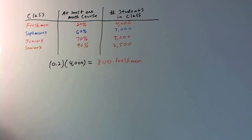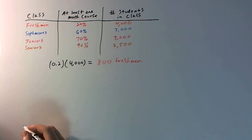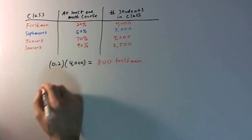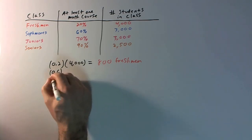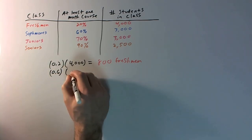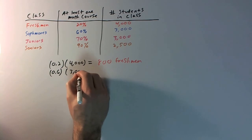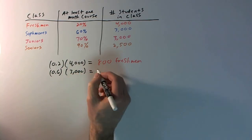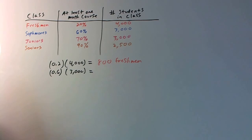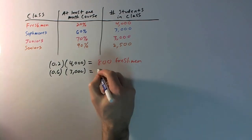And then obviously we can do the same thing for the sophomores, juniors, and seniors. So that's 0.6 times 3,000 — that's going to be 1,800. Sophomores are in blue.